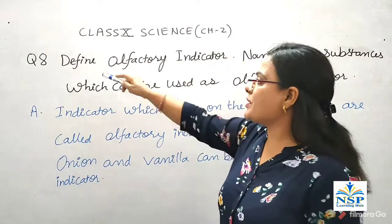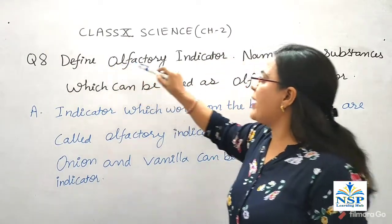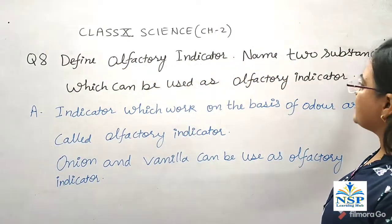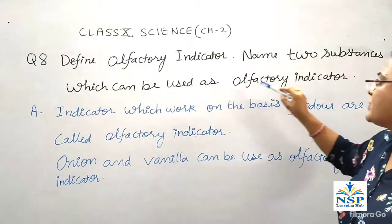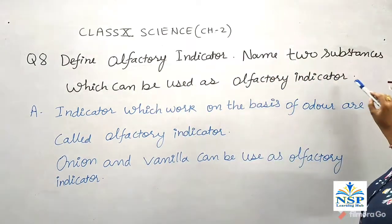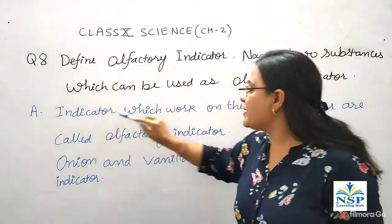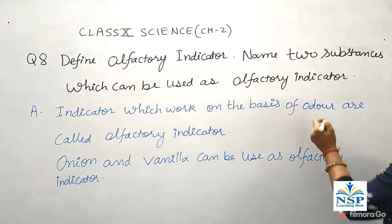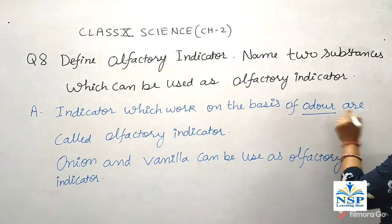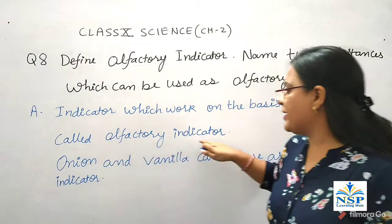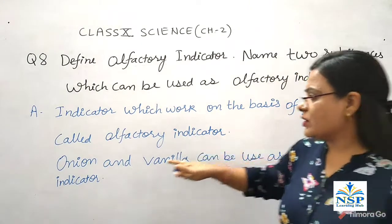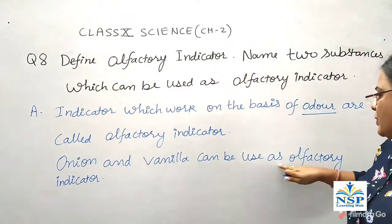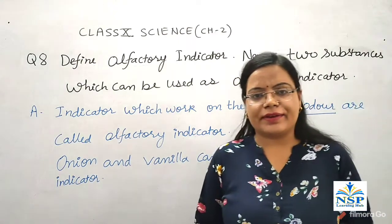Question number 8: Define olfactory indicator. Name two substances which can be used as olfactory indicators. Indicators which work on the basis of odour are called olfactory indicators. Onion and vanilla can be used as olfactory indicators.